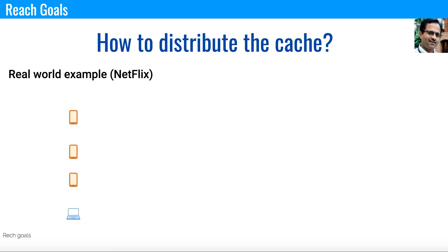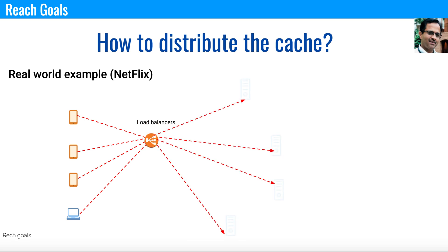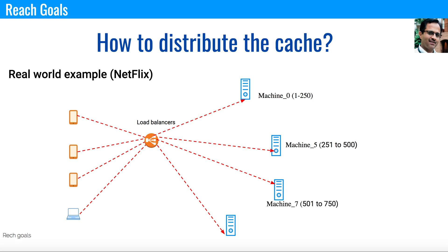In Netflix's case, you have N number of machines connecting to the load balancers, and the load balancers in turn connect to different machines. Each machine has its own movies: movie IDs 1 to 250 in Machine 0, 251 to 500 in Machine 5, 501 to 750 in Machine 7, and 751 to 1000 in Machine 10. The load is distributed across the globe and people are watching movies without any buffering.